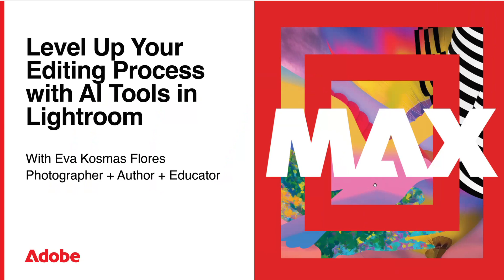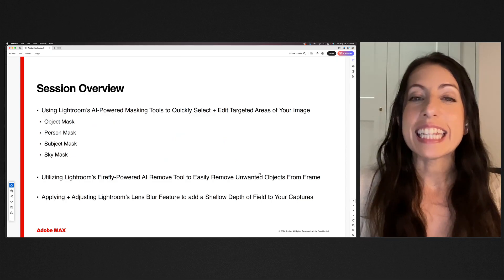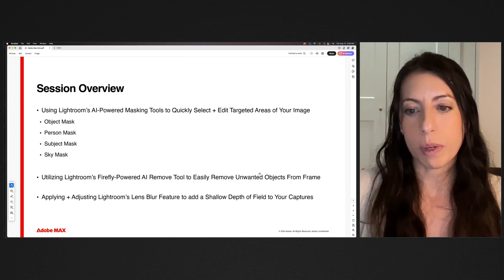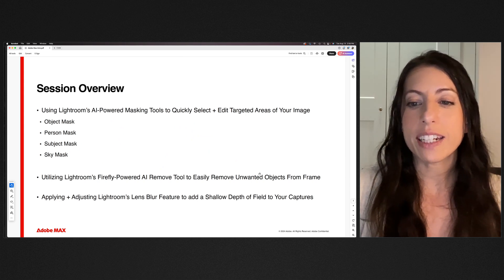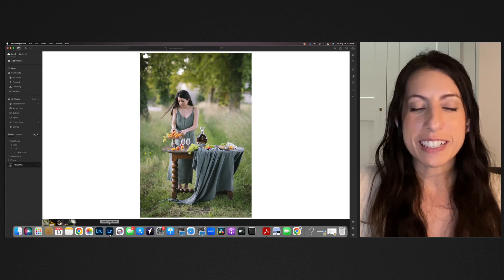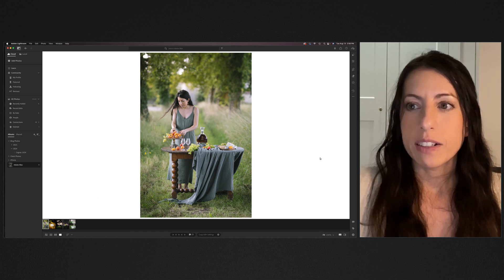Let's go over what we're going to learn together today. We're going to dive into Lightroom's AI-powered masking tools first — the object mask, the person mask, the subject mask, and the sky mask. Then we're going to go over Lightroom's Firefly-powered AI remove tools to easily remove unwanted objects from your frame. Lastly, we'll dive into applying and adjusting Lightroom's lens blur feature to add a dreamy shallow depth of field to your captures.